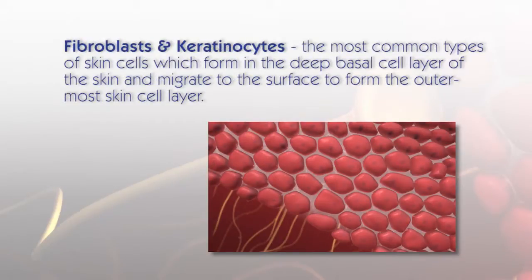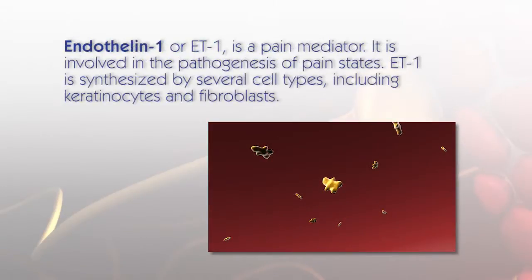Fibroblasts and keratinocytes are common types of skin cells which form in the deep basal cell layer of the skin and migrate to the surface to form the outermost skin cell layer. Endothelin-1, or ET1, is a pain mediator involved in the pathogenesis of pain states. ET1 is synthesized by several cell types, including keratinocytes and fibroblasts.